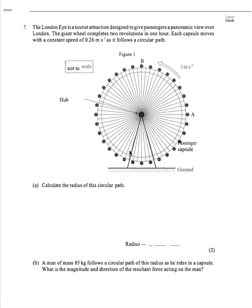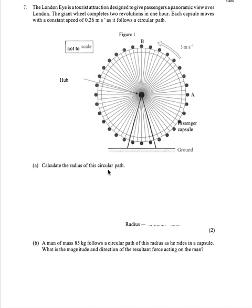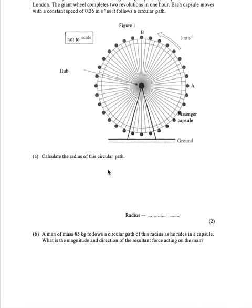This is the London Eye question solution. The London Eye is a tourist attraction designed to give passengers a panoramic view over London. The giant wheel completes two revolutions in one hour. Each capsule moves with a constant speed of 0.26 meters per second as it follows a circular path. Calculate the radius of this circular path.